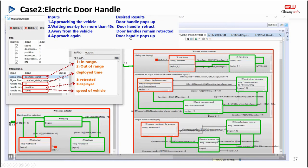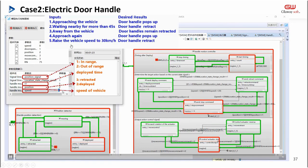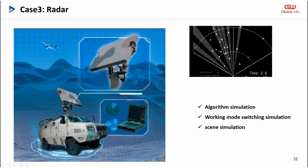The third case is about radar. The radar has various modes such as search, confirm, and track. At present, customers have STK model, MATLAB algorithm model, and architecture model. We want to integrate and verify the rationality of the radar's working mode and the ability of the algorithm under the condition that the view can be seen. The expectation is that objects flying from a distance can be correctly tracked by the algorithm and trigger the three modes of the radar.